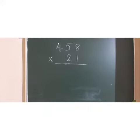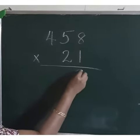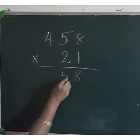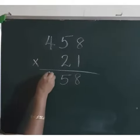Next, multiply 458 by 21. We have to start from 1. 1-8s are 8 and 1-5s are 5 and 1-4s are 4.